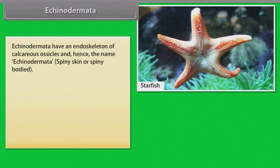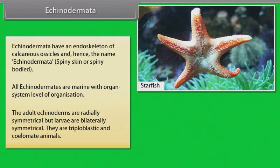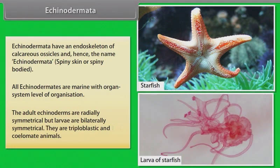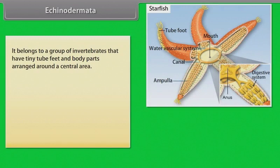Echinodermata have an endoskeleton of calcareous ossicles, hence the name Echinodermata meaning 'spiny skin' or 'spiny bodied'. All Echinoderms are marine with organ system level of organization. The adult Echinodermata are radially symmetrical, but larvae are bilaterally symmetrical. They are triploblastic and coelomate animals belonging to a group of invertebrates with tiny tube feet and body parts arranged around a central area.